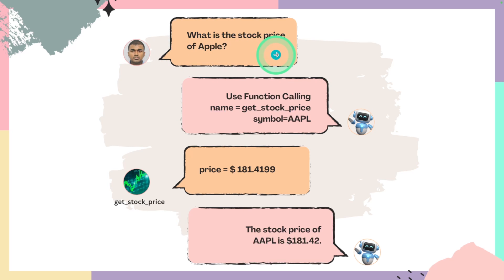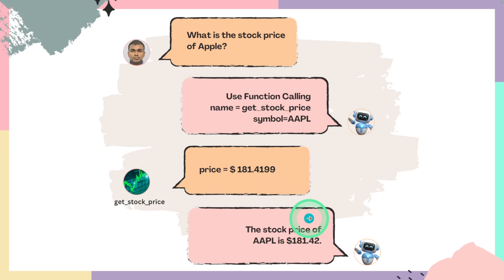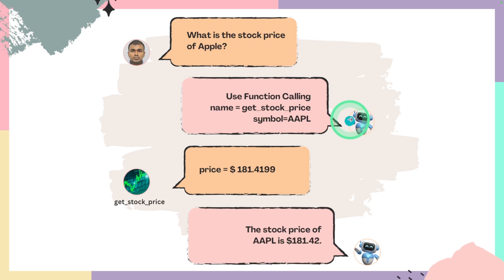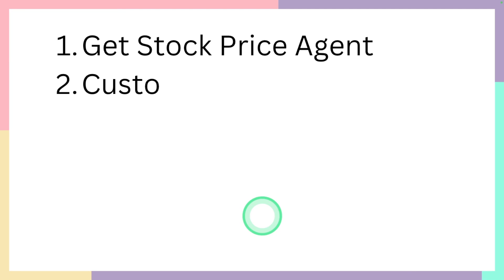When we ask 'What's the stock price of Apple?', the AI agent is going to use the tool call and ask us to run our internal tool, which is capable of getting the current stock price. We then send that data back to the large language model — to Anthropic Claude — to get a much more accurate answer. Similarly, we can integrate our own systems such as a customer service tool: a customer asks for order details, we initiate the tool call, integrate with our internal CRM, and get the accurate answer.